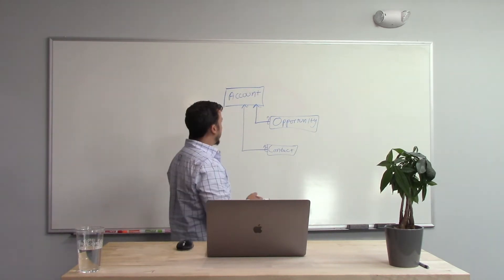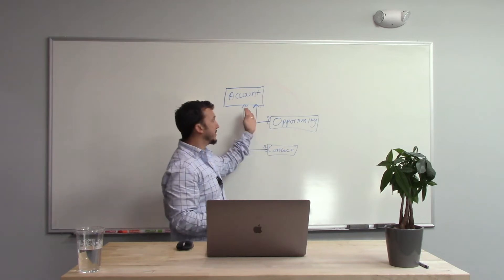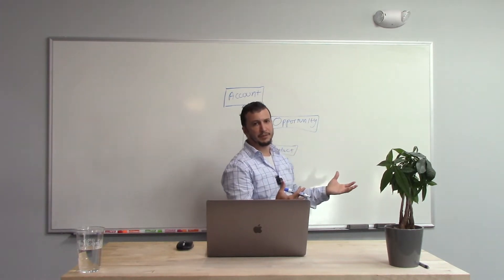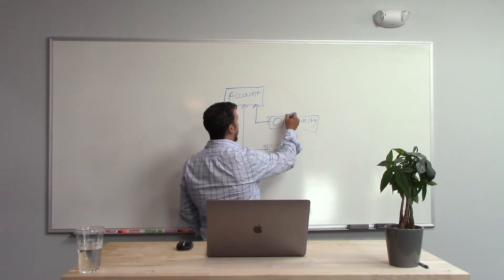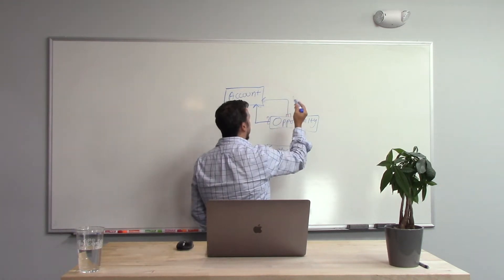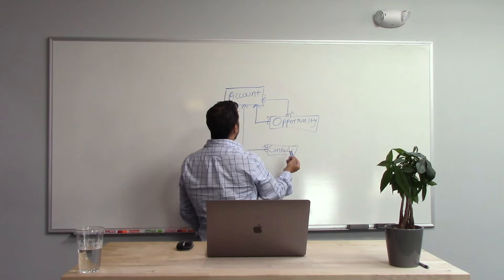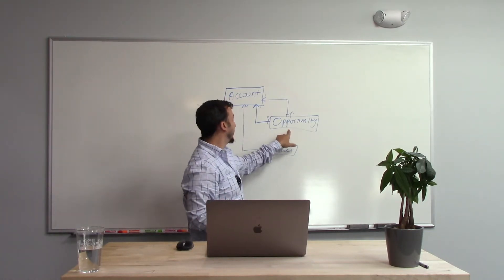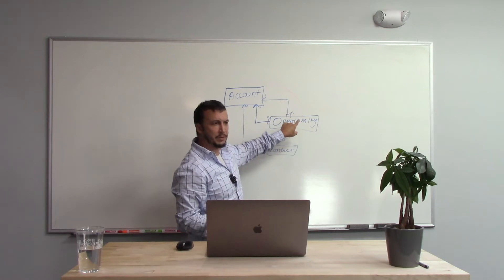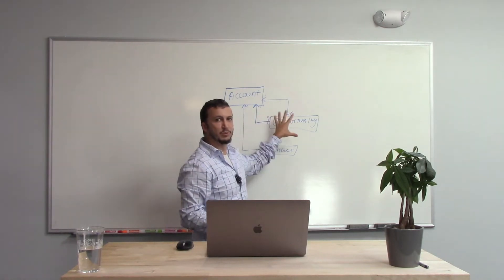Now we run into a problem when we say, on this opportunity, I may deal with another account — maybe I have the customer, but maybe I have some preferred vendor or reseller that has something to do with this. In this case, we might make another account lookup field and call it 'partner' — another account that has to do with this opportunity. What we've done is created another one-to-N. Now we have two potential accounts related to this opportunity. We have a one-to-two relationship specifically, not a true many.